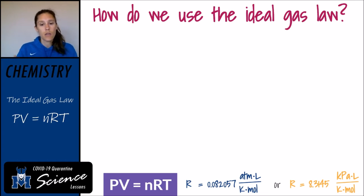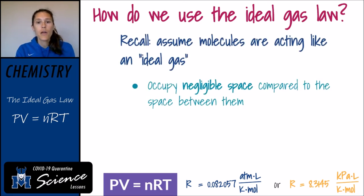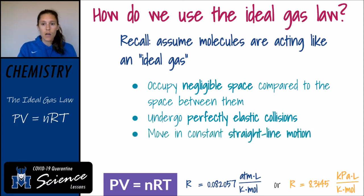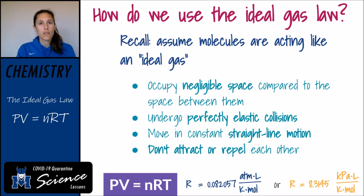This is only going to apply to gases that are acting like ideal gases. That means the gas molecules occupy negligible space compared to the amount of space they take up, they undergo perfectly elastic collisions so they're not losing energy when they bump into a wall or each other, they move in constant straight-line motion, and they don't attract or repel each other. We can get pretty good estimates using the ideal gas law as long as we're not at extremes of pressure and temperature.